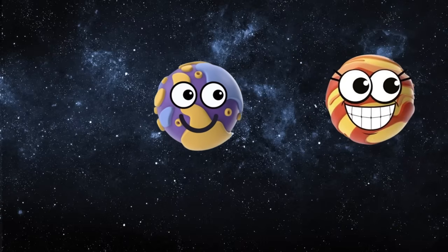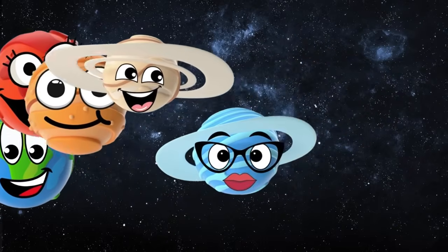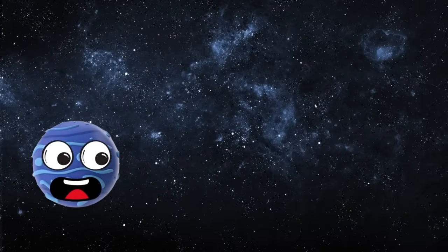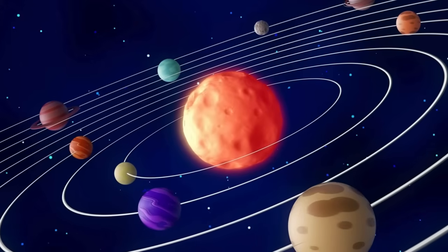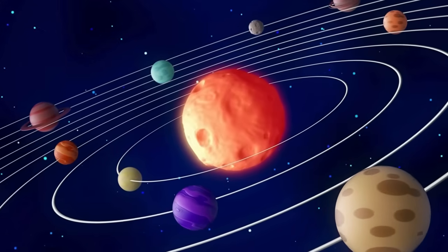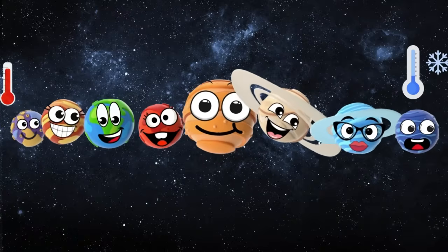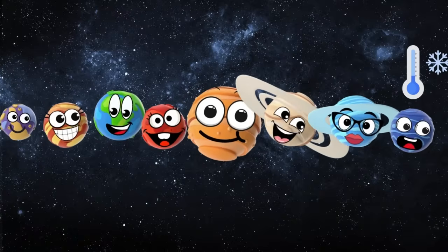Mercury, Venus, Earth and Mars, Jupiter, Saturn, Uranus and Neptune, the last. And around the sun we spin and play, eight cool planets on display. From the hot to freezing cold, the solar system's bright and bold.